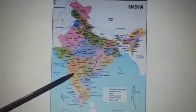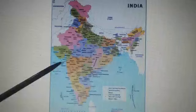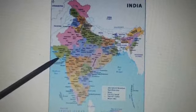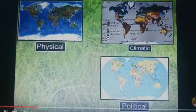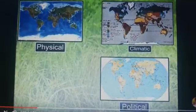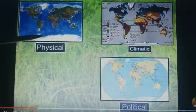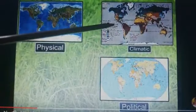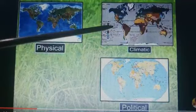A map is a drawing of a whole or a part of the earth on a flat surface. There are three types of maps: first, physical maps; next, political maps; third, climatic or thematic maps.